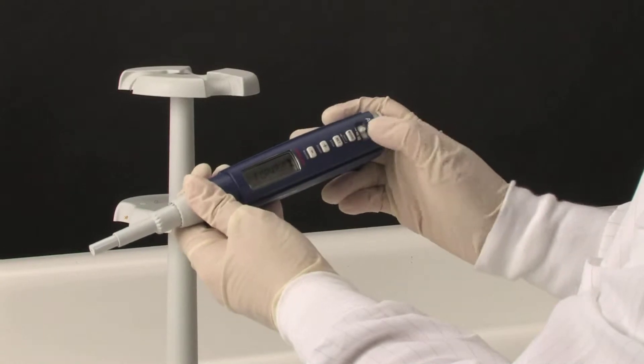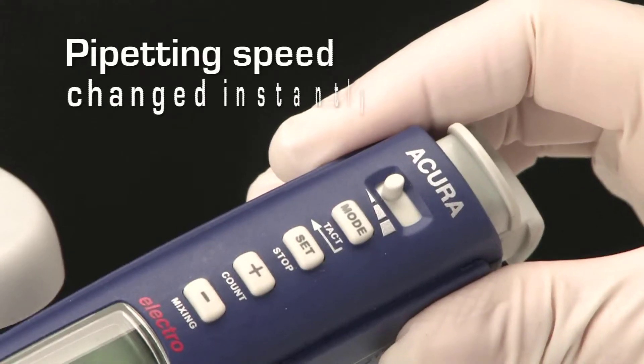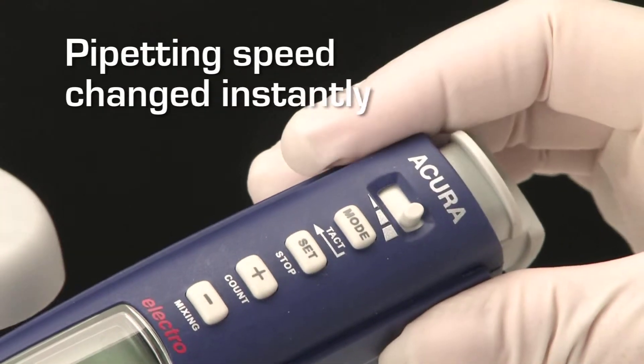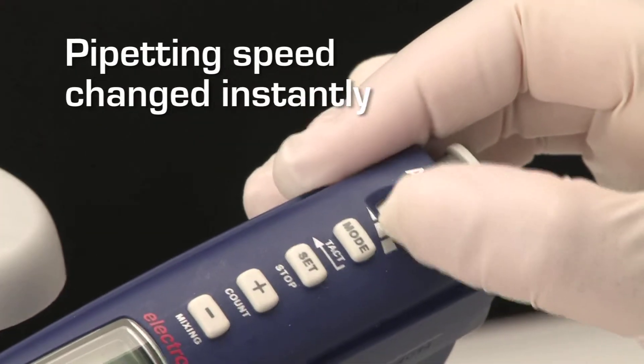Three pipetting speeds can be selected quickly and easily. To change the speed before or during operation, simply move the selector to the right to increase the speed, or to the left to decrease it.